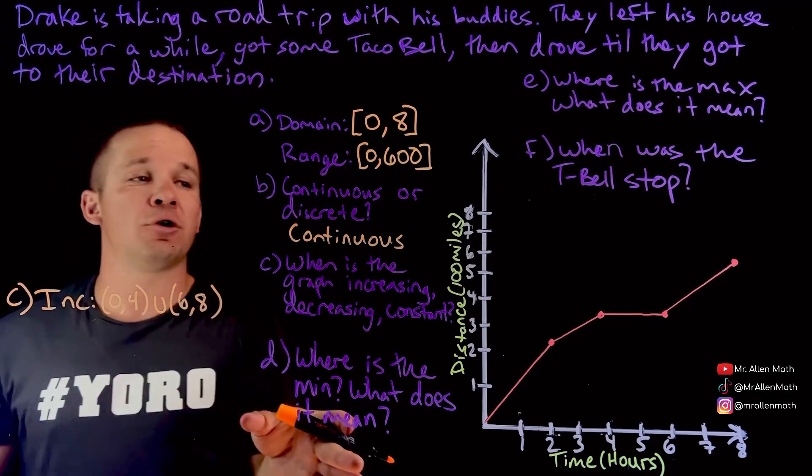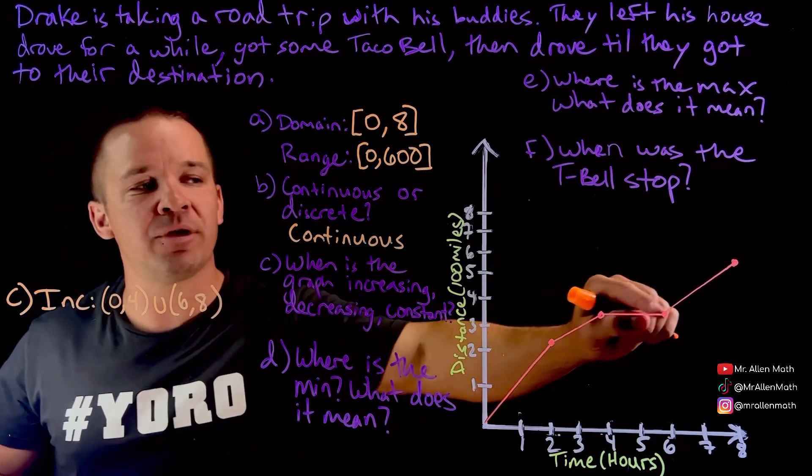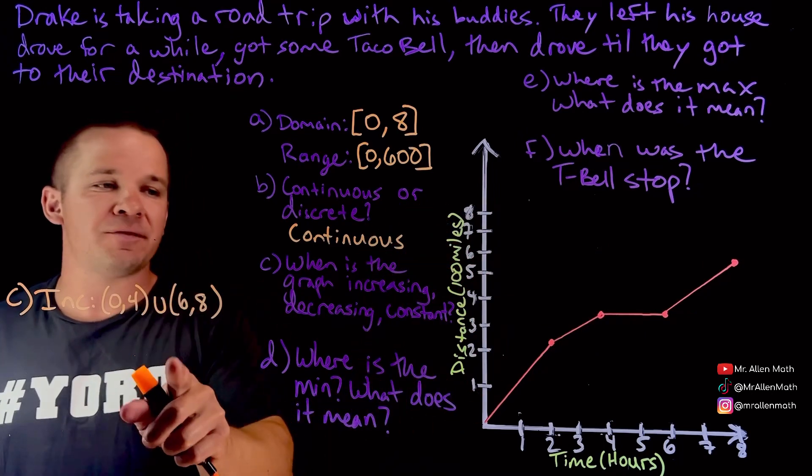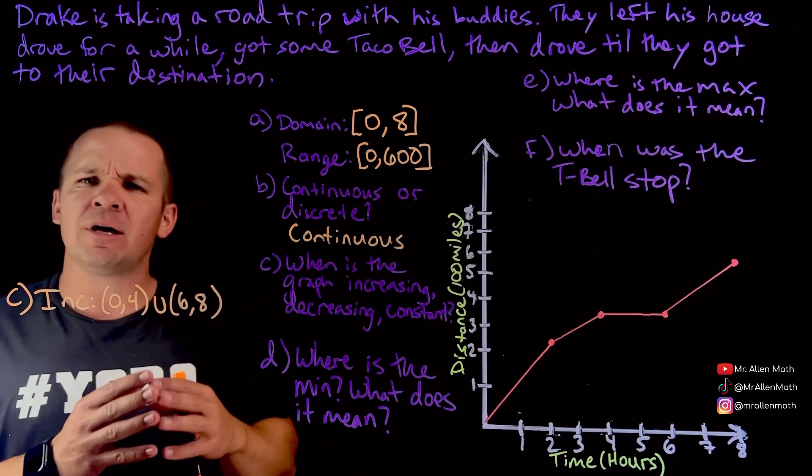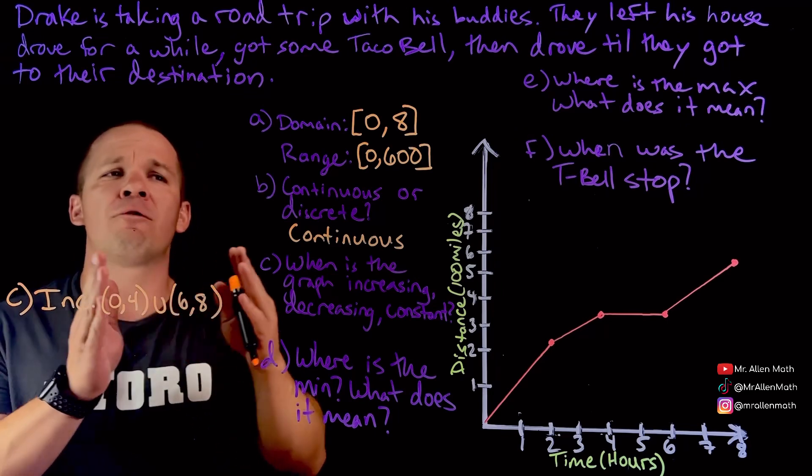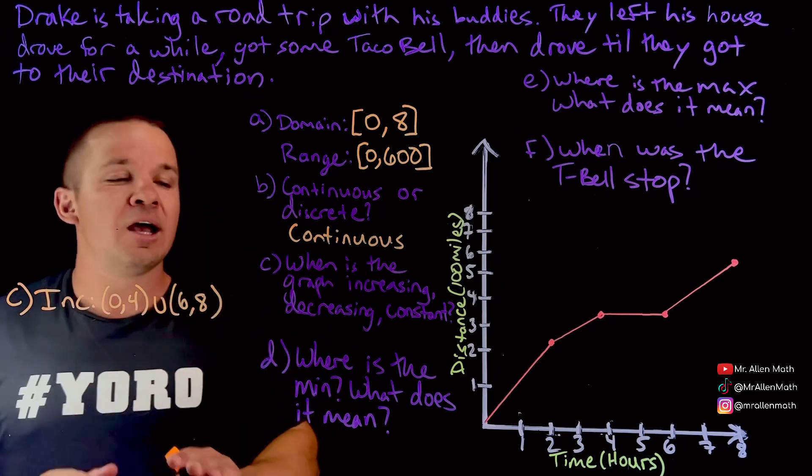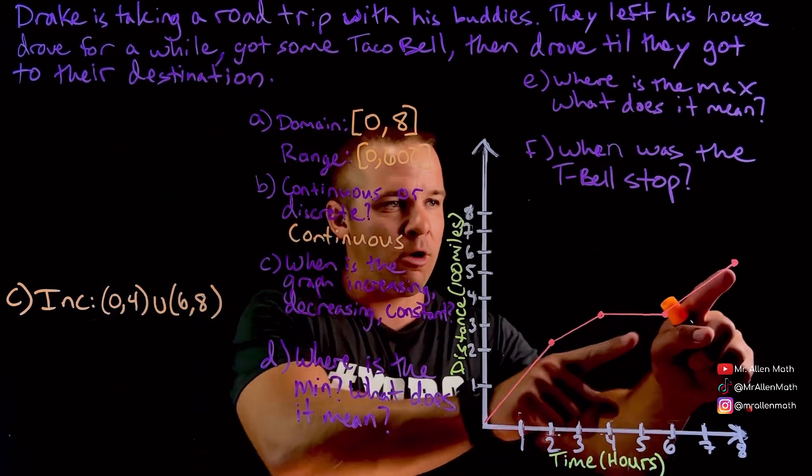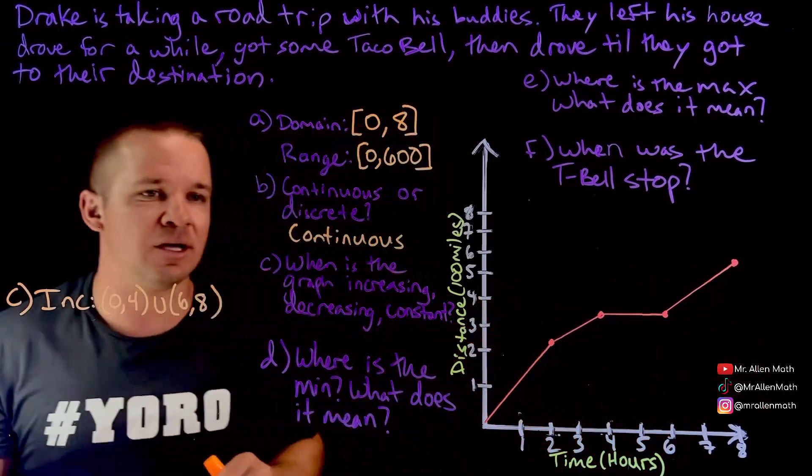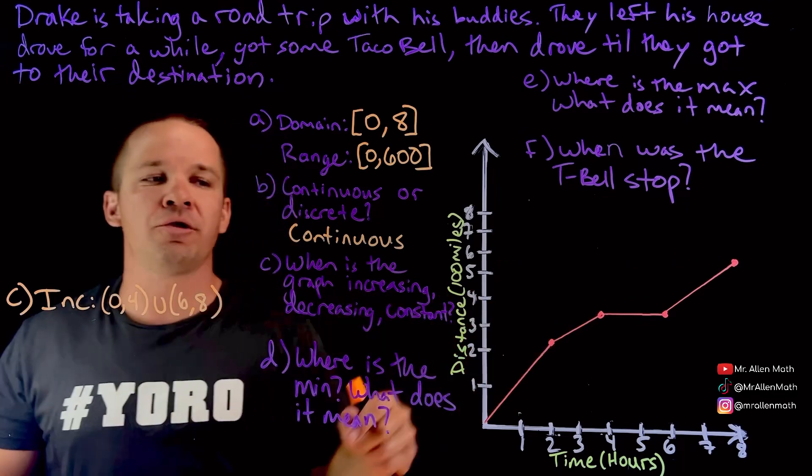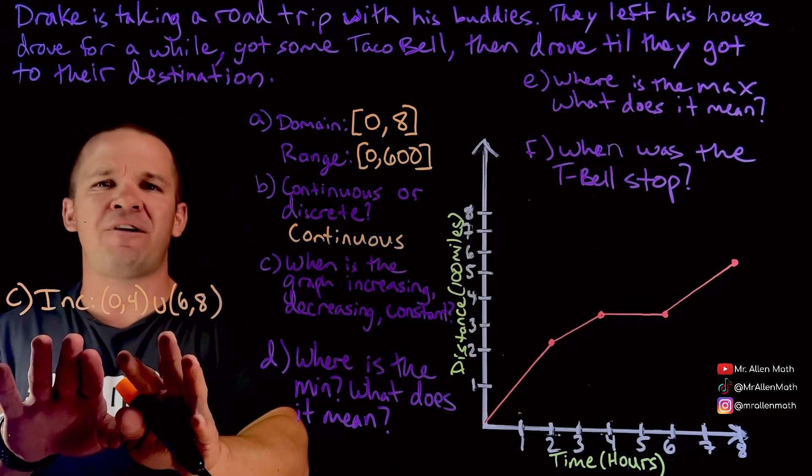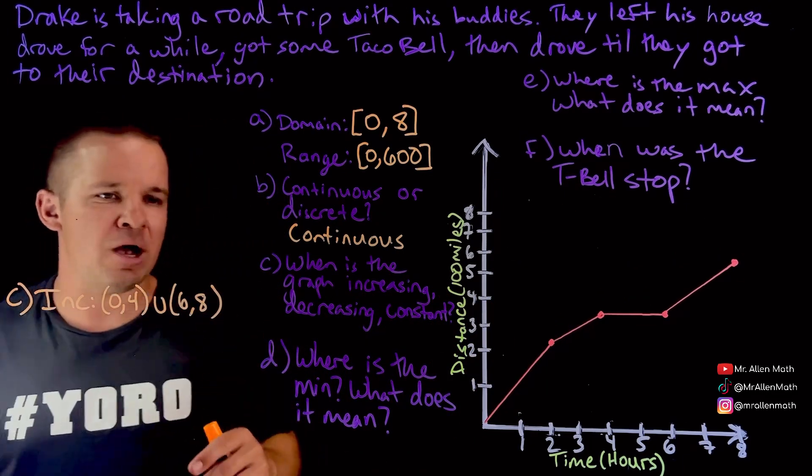Now, your teacher might use slightly different notation. They may just ask you to label it on the graph. These parentheses, they mean we're not including the point because you can't really be increasing at a specific point only over a span of points. We're increasing from here to here, and we're increasing from here to here. So they may just even ask you to circle those things on the graph. This is a little more fancy. So you may or may not be here yet.